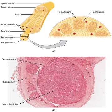The nervous system is the part of an animal that coordinates its actions by transmitting signals to and from different parts of its body. In vertebrates it consists of two main parts: the central nervous system (CNS) and the peripheral nervous system (PNS). The CNS consists of the brain and spinal cord. The PNS consists mainly of nerves, which are enclosed bundles of the long fibers or axons that connect the CNS to every other part of the body.